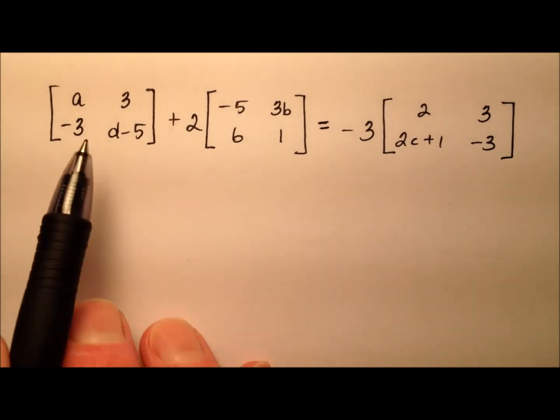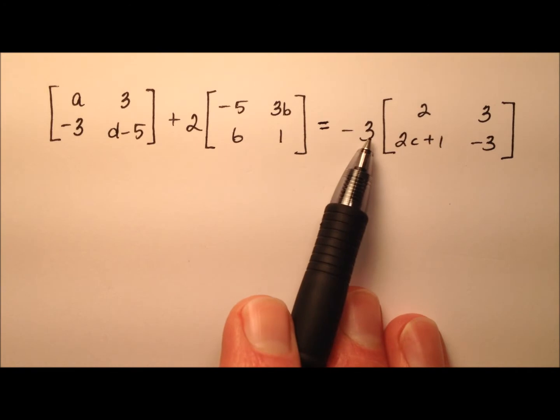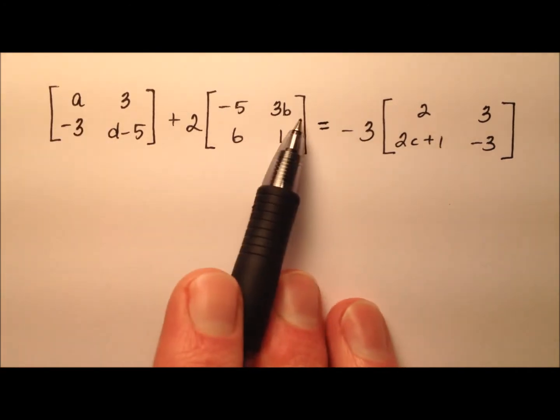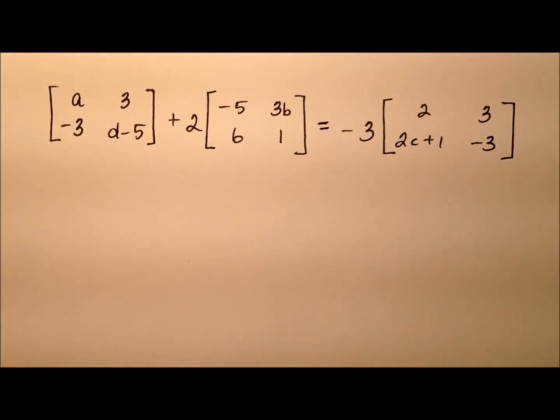In this example, we have ourselves a matrix equation here. We have a little bit of scalar multiplication thrown in, and we also have four variables, A, B, C, and D, for which we're going to solve.